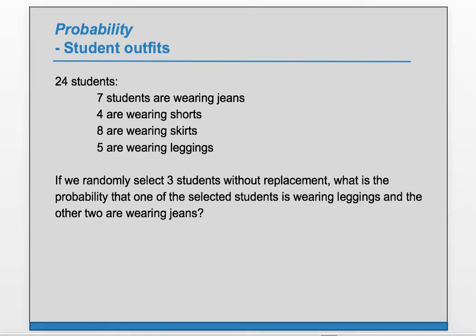If we randomly select 3 without replacement, what's the probability that one is wearing leggings and the other two are wearing jeans? So, how could this happen? It could be the case that the first person we select is wearing leggings, and then the next two we select are wearing jeans — so L, J, J. If we evaluate this probability, is this our final answer? No, because this is not the only way that we could select one with leggings and two with jeans.